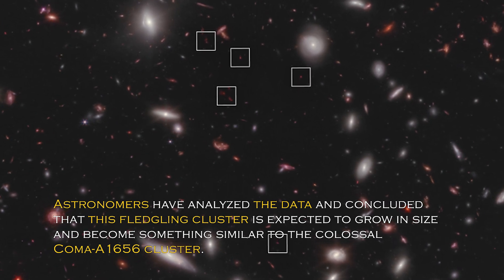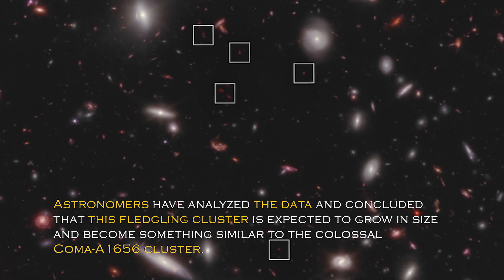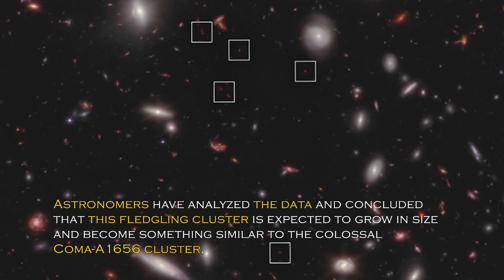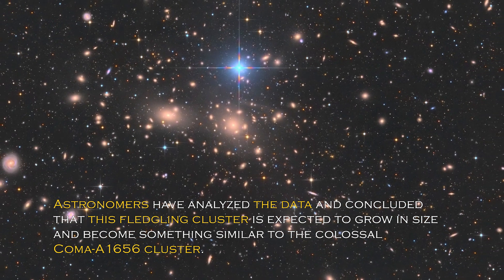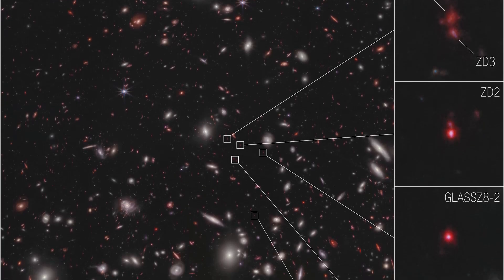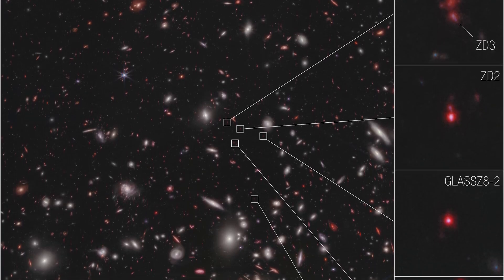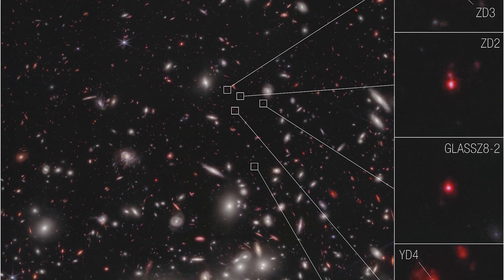Astronomers have analyzed the data and concluded that this fledgling cluster is expected to grow in size and become something similar to the colossal coma A1656 cluster. The place where all this is taking place is unique and special, as it is in an area of accelerating galactic evolution thanks to the James Webb Space Telescope.